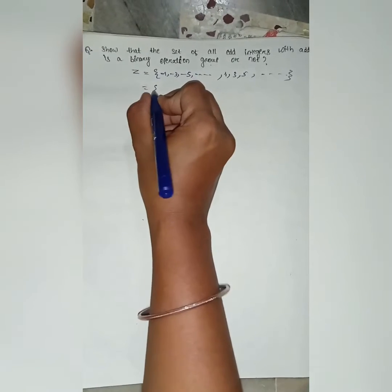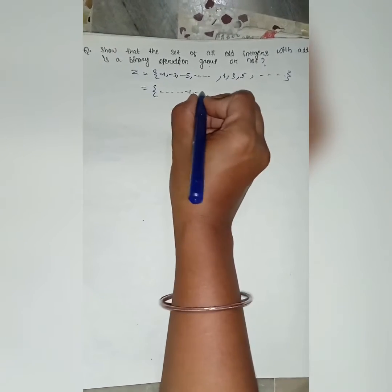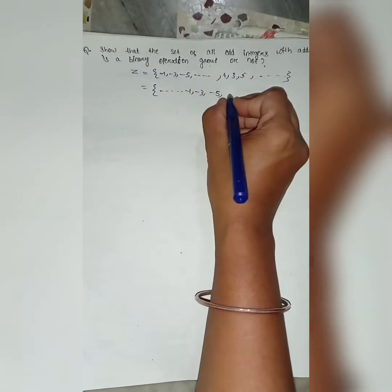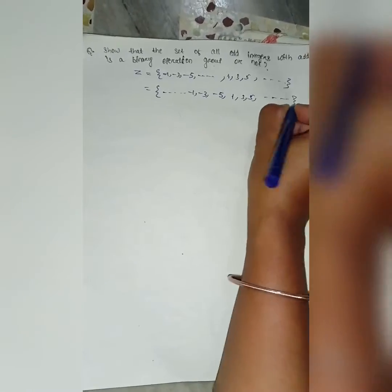Or you can write down like this: dot, dot, dot, minus 1, minus 3, minus 5, 1, 3, 5, dot, dot, dot. Ok?